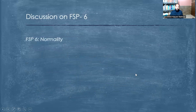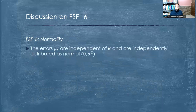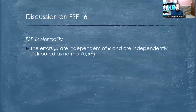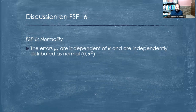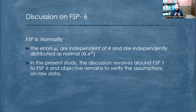FSP6 is normality. This is the most widely used finite sample property before applying regression. Some people confuse normal distribution of data with normality as an assumption of regression — these are two different things. Normal distribution refers to the distribution of the data, whereas normality here refers to the normal distribution of the error term in econometrics. These two are not the same thing.